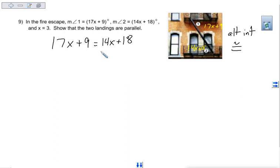And then we're going to subtract 14x from both sides. So 3x plus 9 equals 18. Subtract 9 from both sides.